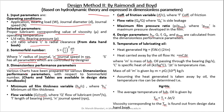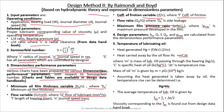Various charts have been prepared for dimensionless performance parameters with respect to Sommerfeld number; charts and tables are available in the design data handbook. These dimensionless performance parameters are: minimum oil film thickness variable H₀/C (where H₀ is minimum oil film thickness), flow variable Q/(RCNL) (where Q is lubricant flow), coefficient of friction variable RF/C, flow ratio where Q_S is side leakage, and maximum film pressure ratio P_max. Design parameters H₀, Q, F, Q_S, and P_max are calculated from these dimensionless performance parameters using the charts or tables from the design data handbook with the help of the Sommerfeld number.